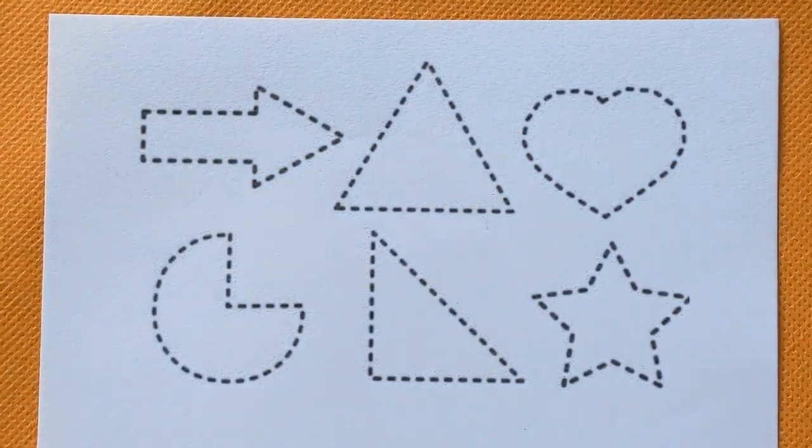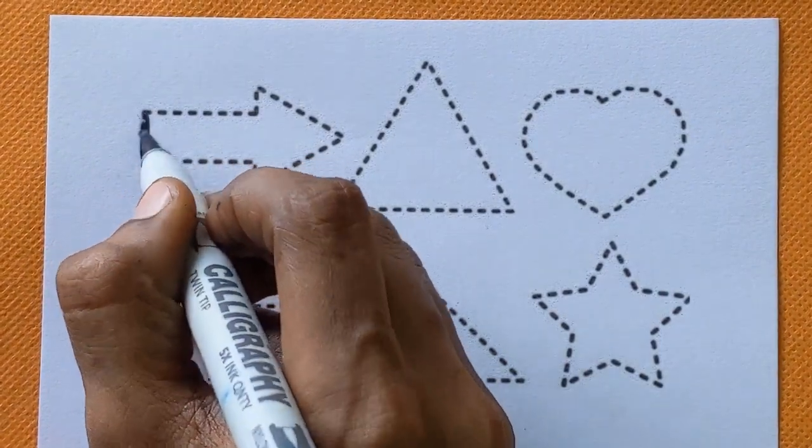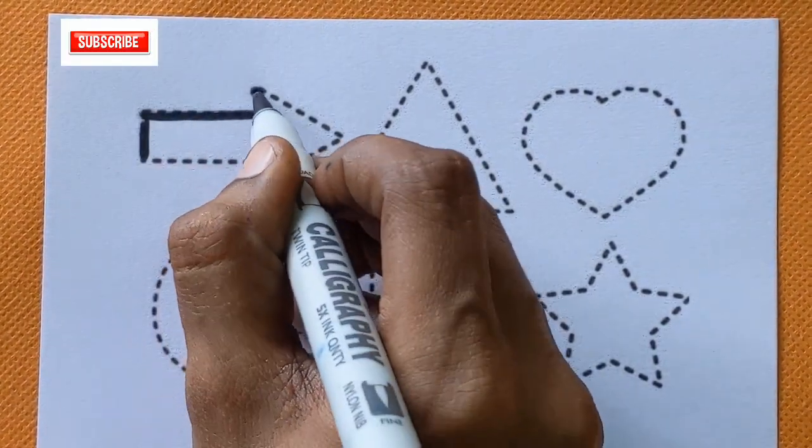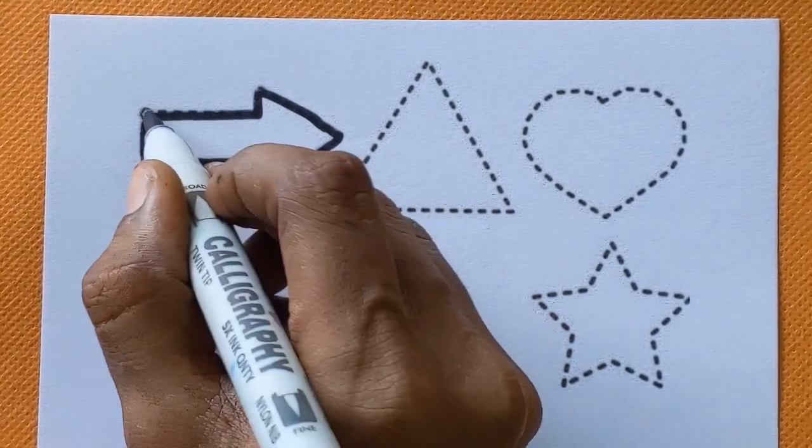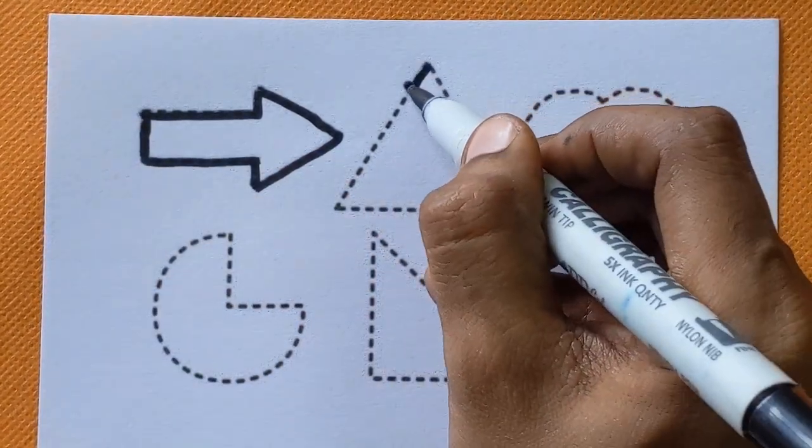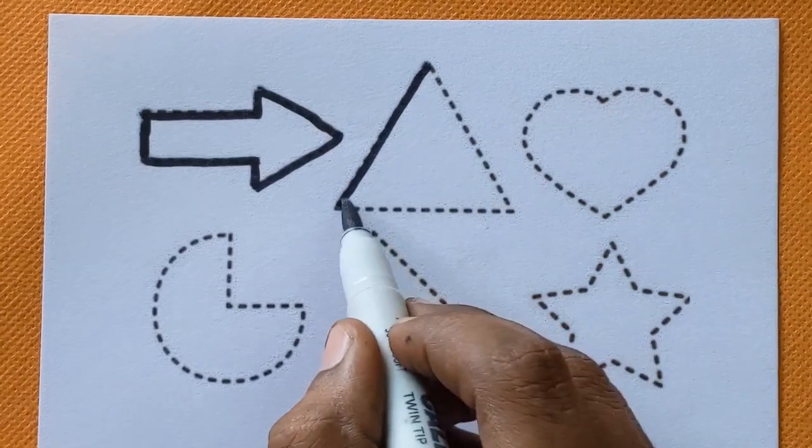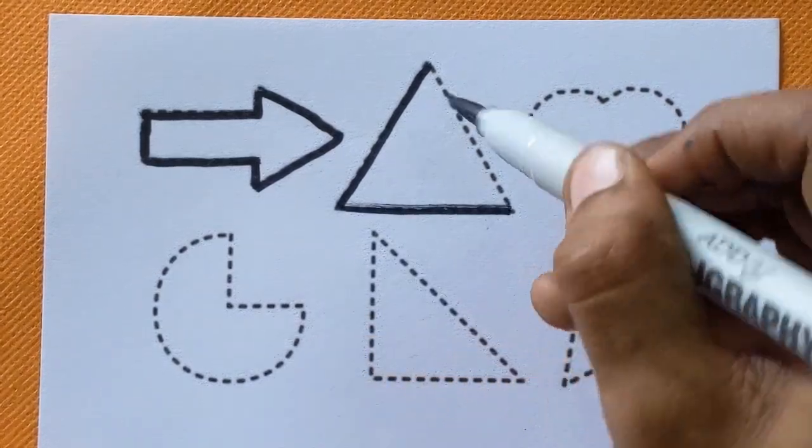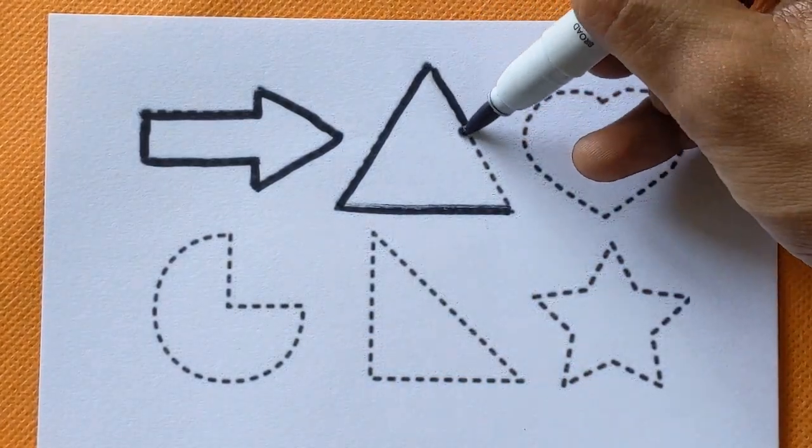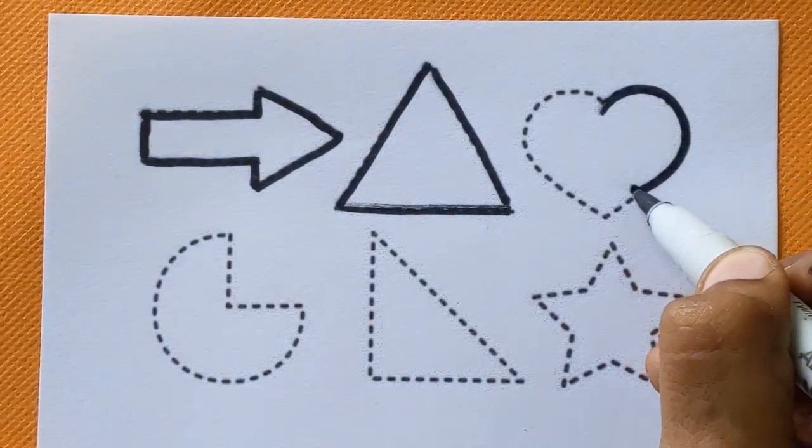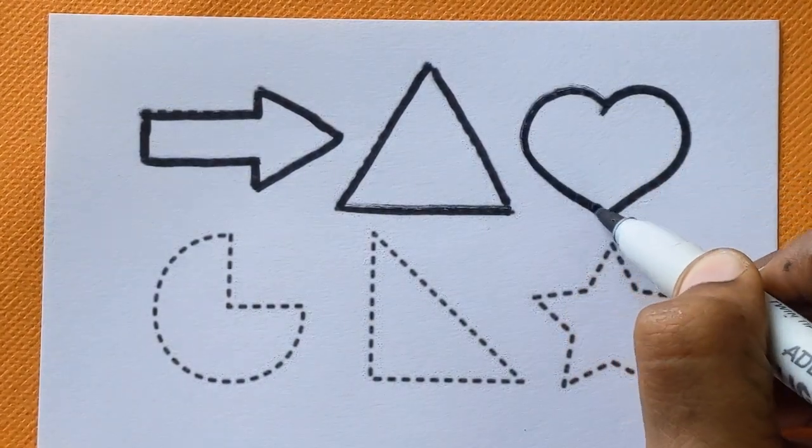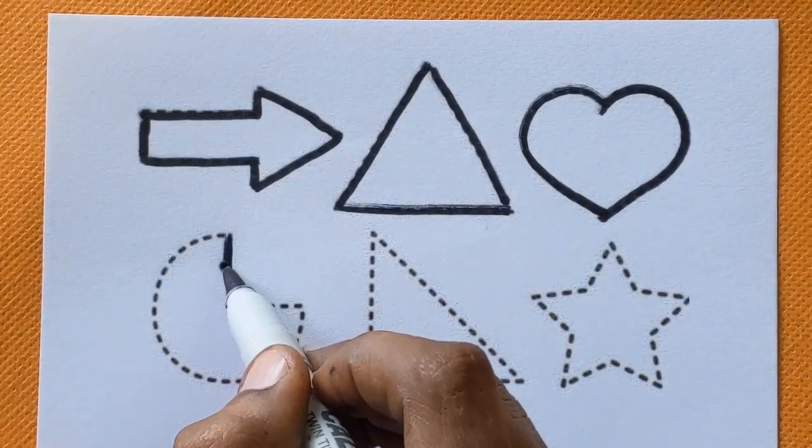At first, we will draw the shapes by following the dots. This is arrow, triangle, heart shape, pie.